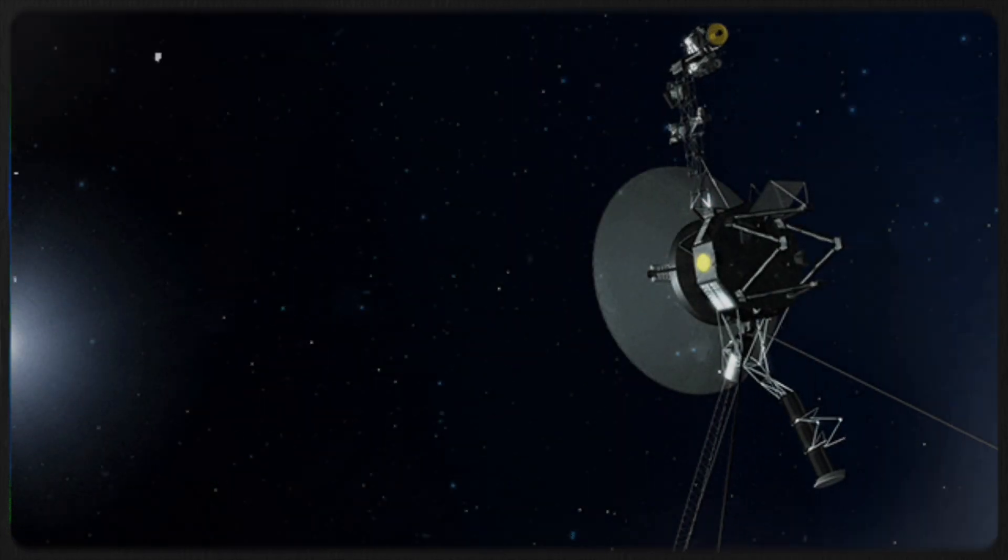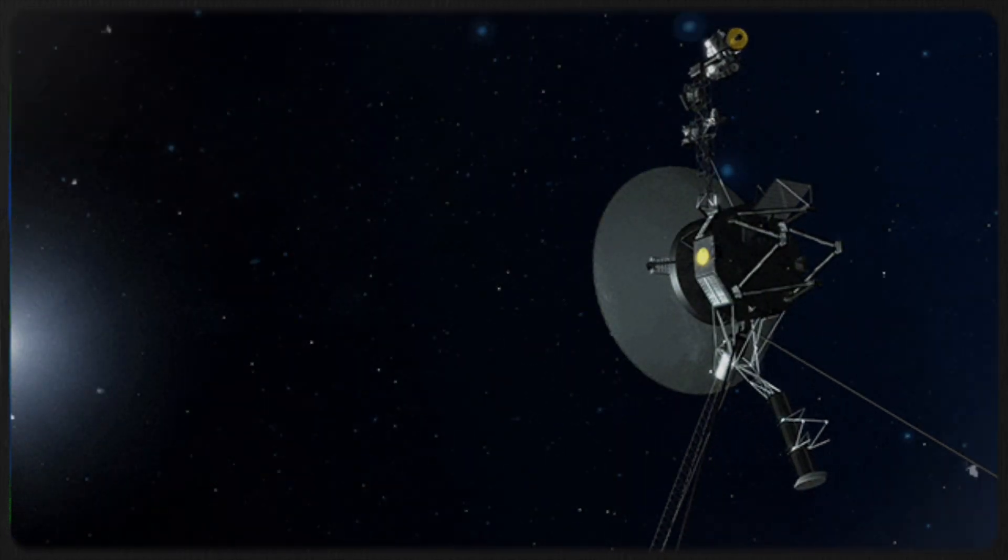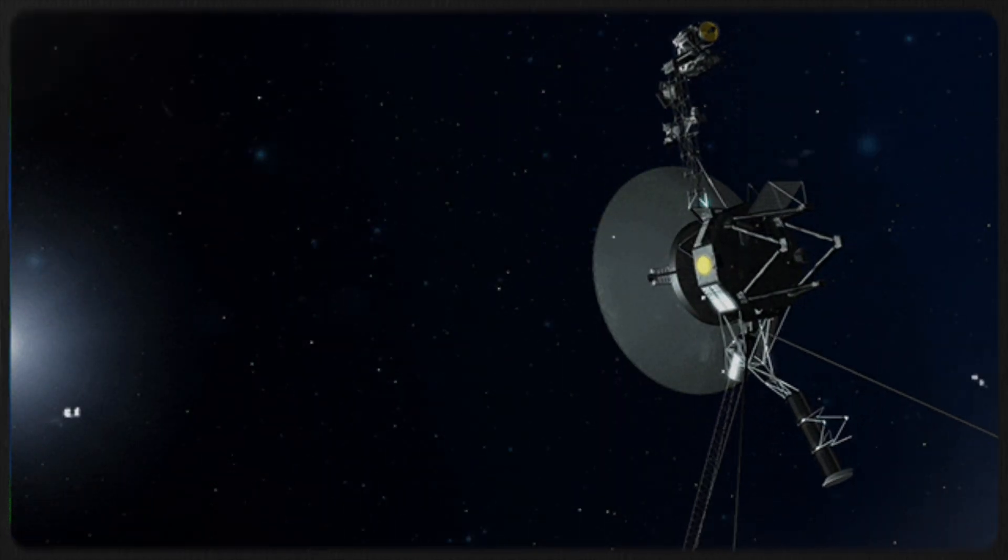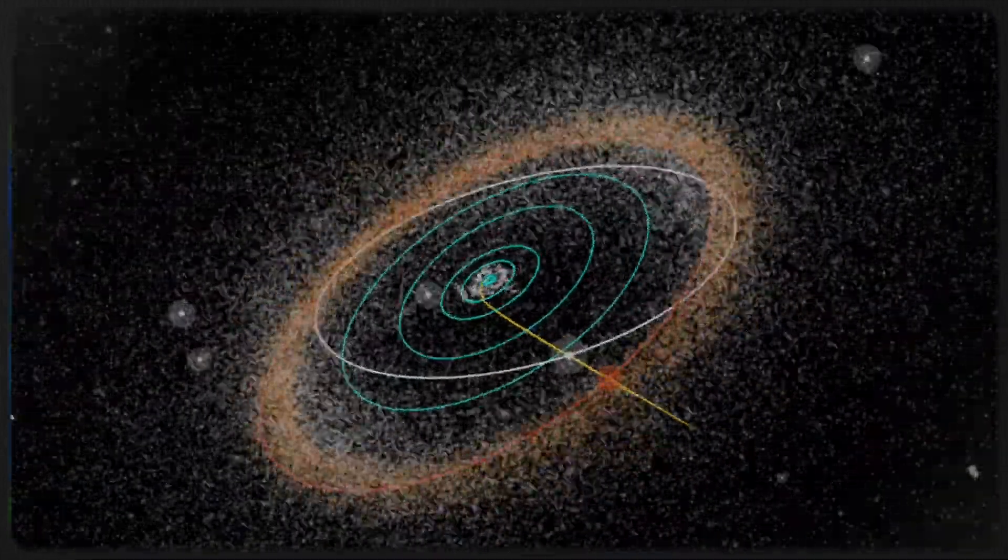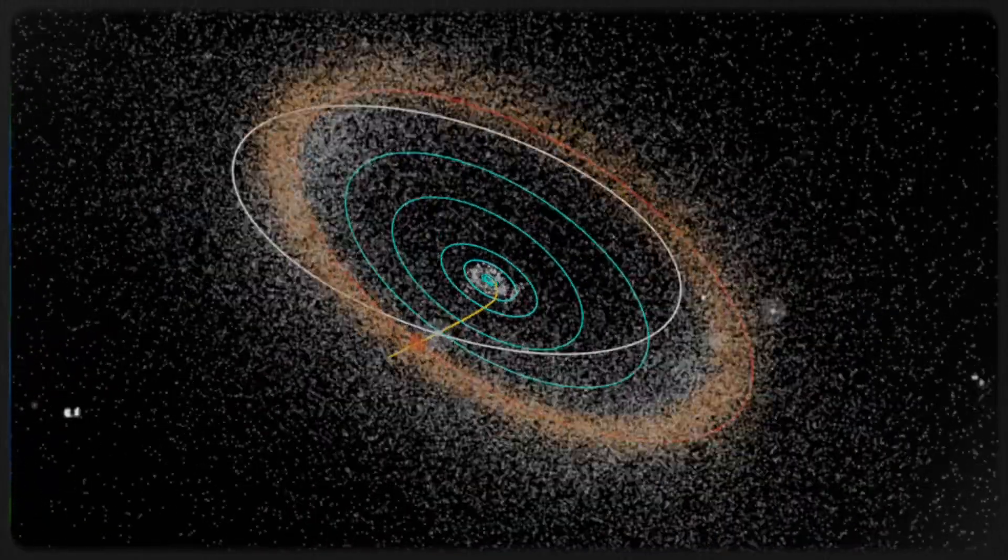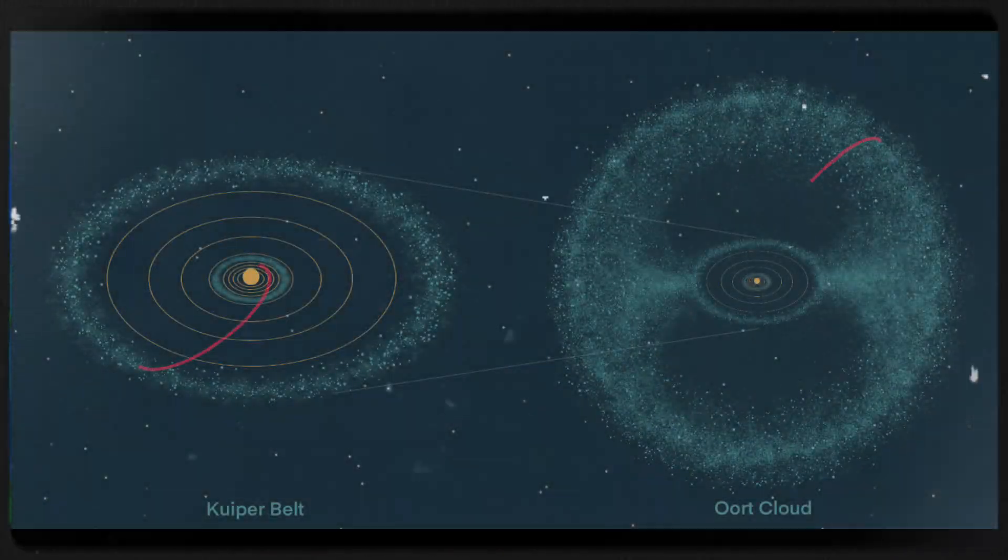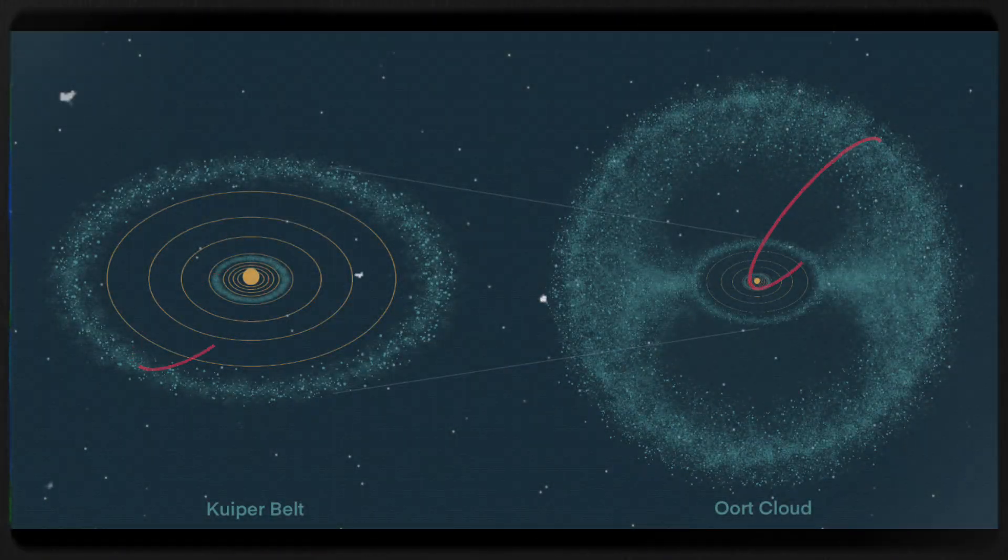It's important to distinguish between the limits of the solar system and the boundary of interstellar space. The Oort Cloud, a distant collection of comet-like objects bound by the Sun's gravity, extends halfway to the nearest star. It will take the Voyagers at least another 300 years to reach its inner edge.